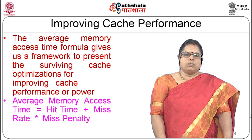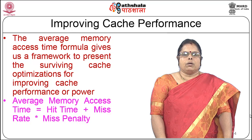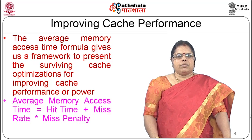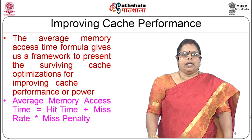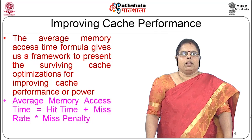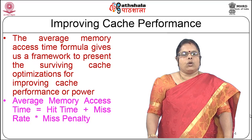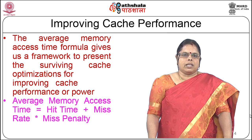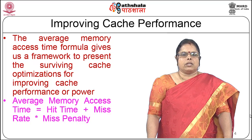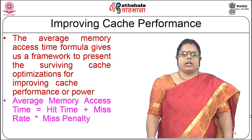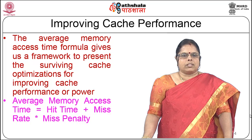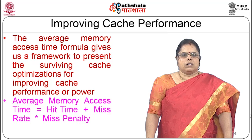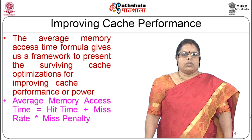These terms were defined in the previous module. When the processor generates a memory reference, it goes to the first level of cache. If it hits there, that access is associated with the hit time. If it does not hit, that is the miss rate. When you miss in the cache you have to go to the next level of memory and bring it back, and the time associated with that is the miss penalty.